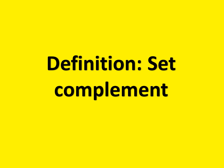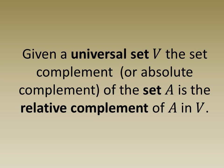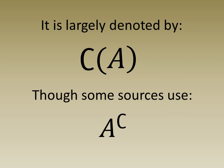Definition: Set Complement. Given a universal set V, the set complement or absolute complement of the set A is the relative complement of A in V. It is largely denoted by C of A, though some sources use A to the C.